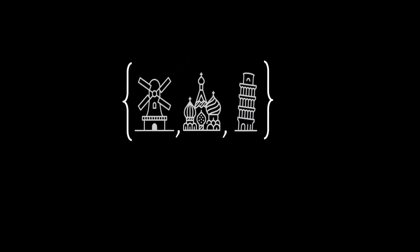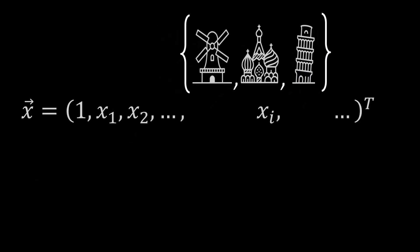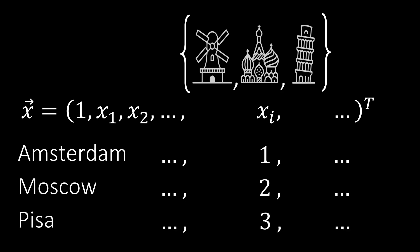We could encode this set by assigning a dedicated value to each city. For example, we represent Amsterdam with a 1, Moscow with a 2, and Pisa with a 3. But then Moscow somehow lies between Amsterdam and Pisa, so Moscow will behave exactly like a mix of Amsterdam and Pisa. This is probably not what we want.